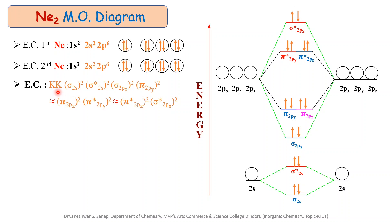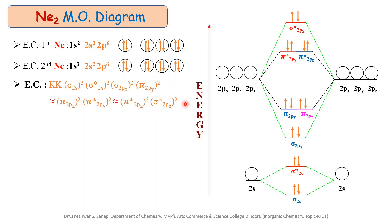The final electronic configuration is: KK, sigma 2s², sigma star 2s², sigma 2px², pi 2py² degenerate with pi 2pz², higher energy pi star 2py² degenerate with pi star 2pz², and last sigma star 2px².